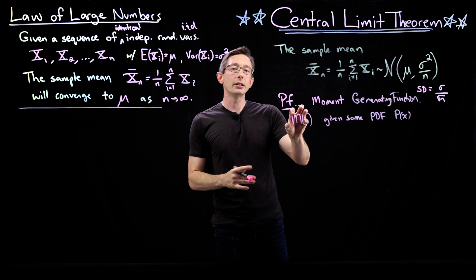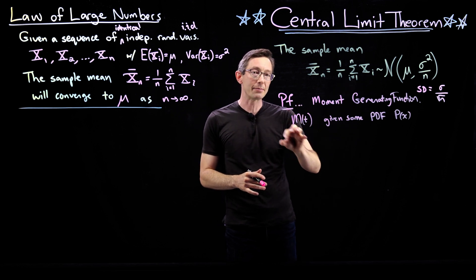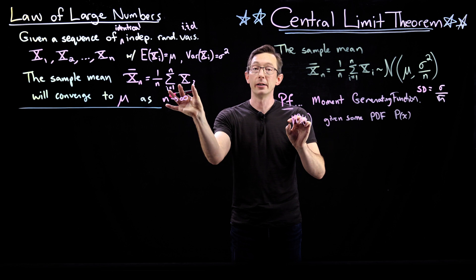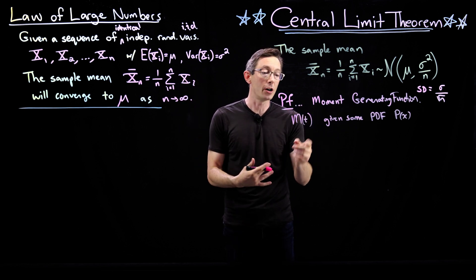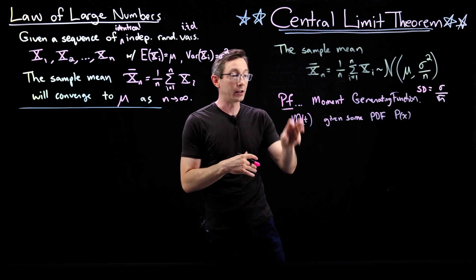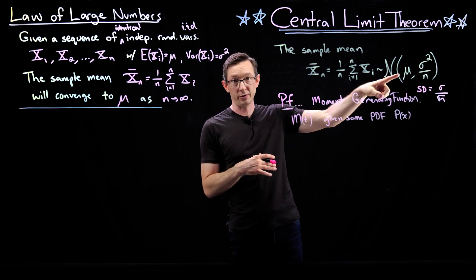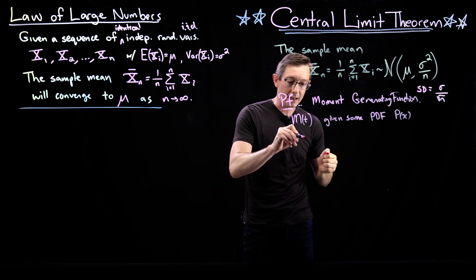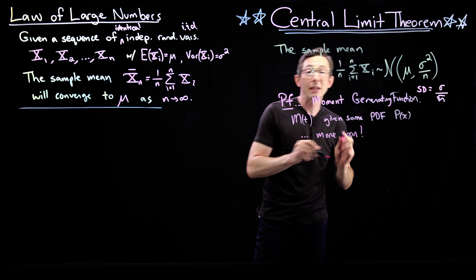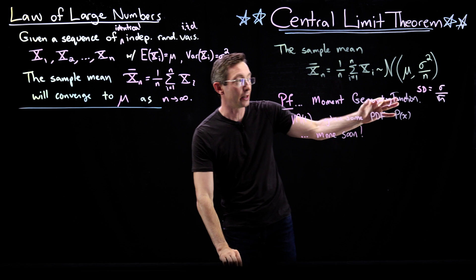And so what we're going to do is we're going to approximate this moment generating function of this thing we want out of the moment generating functions of the thing we have. And we're going to show that this kind of aggregate moment generating function converges to that of a normal distribution. So more soon.